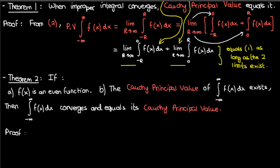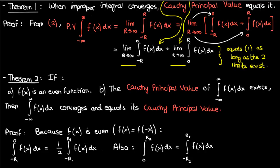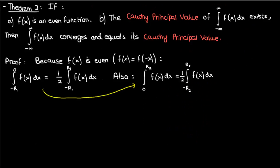So let's prove this theorem. Because f of x is even, its integral from negative R1 to 0 equals half the integral from negative R1 to R1, just because of the symmetry inherent in an even function. An even function is where f of x equals f of negative x — that function reflects evenly about the y-axis. Similarly, the integral from 0 to R2 equals half the integral from negative R2 to R2, because f of x is even.